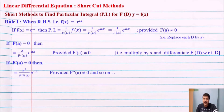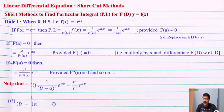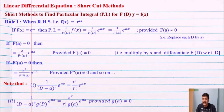Note that if 1/(D−a)^r operates on e^(ax), replacing D by a gives zero r times, so you can directly write x^r / r! · e^(ax). Also, for 1/[(D−a)^r · g(D)] operating on e^(ax), it gives x^r / r! · g(a), provided g(a) is not equal to zero.